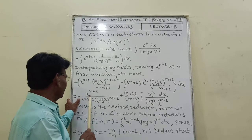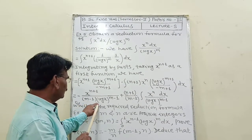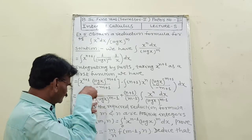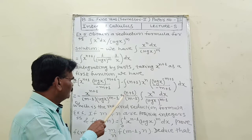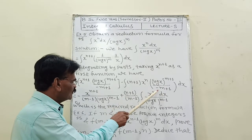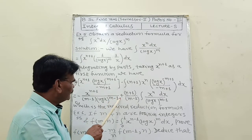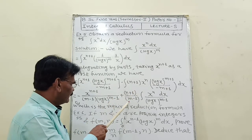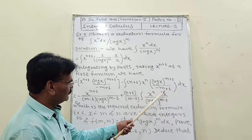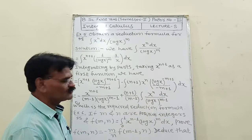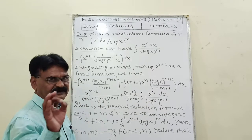So the result is: minus x^(n+1) divided by (m-1) times (log x)^(m-1), plus (n+1)/(m-1) times the integral of x^n dx divided by (log x)^(m-1). This is the required reduction formula.